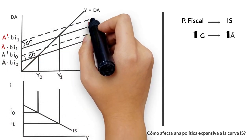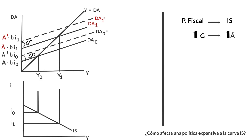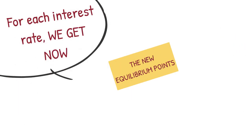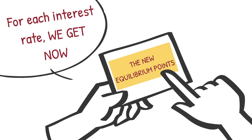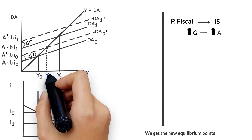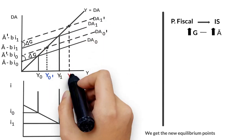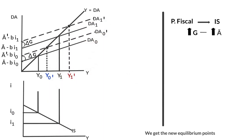The increase in autonomous expenditure to (A prime minus B·I sub one) induces a parallel shift of the aggregate demand curve sub one prime by the same value. For each interest rate I₀ and I₁, we now get new equilibrium points. In the case of I₀, we get the equilibrium point that determines the new income level Y sub zero prime. In the case of I₁, we get the new equilibrium point for Y sub one prime.